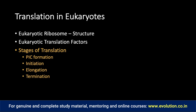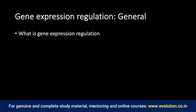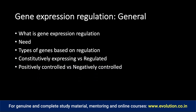After translation, come to gene expression regulation. Divide it into three parts: general, prokaryotic, and eukaryotic. In general, write a high-quality all-encompassing definition of gene expression regulation, then address the need — why gene expression regulation is crucial for environmental response, for developmental transitions of the organism, and how it prevents metabolic wastage. Then cover types of genes based on regulation: constitutively expressing versus regulated genes, positively controlled versus negatively controlled, and inducible versus repressible genes.